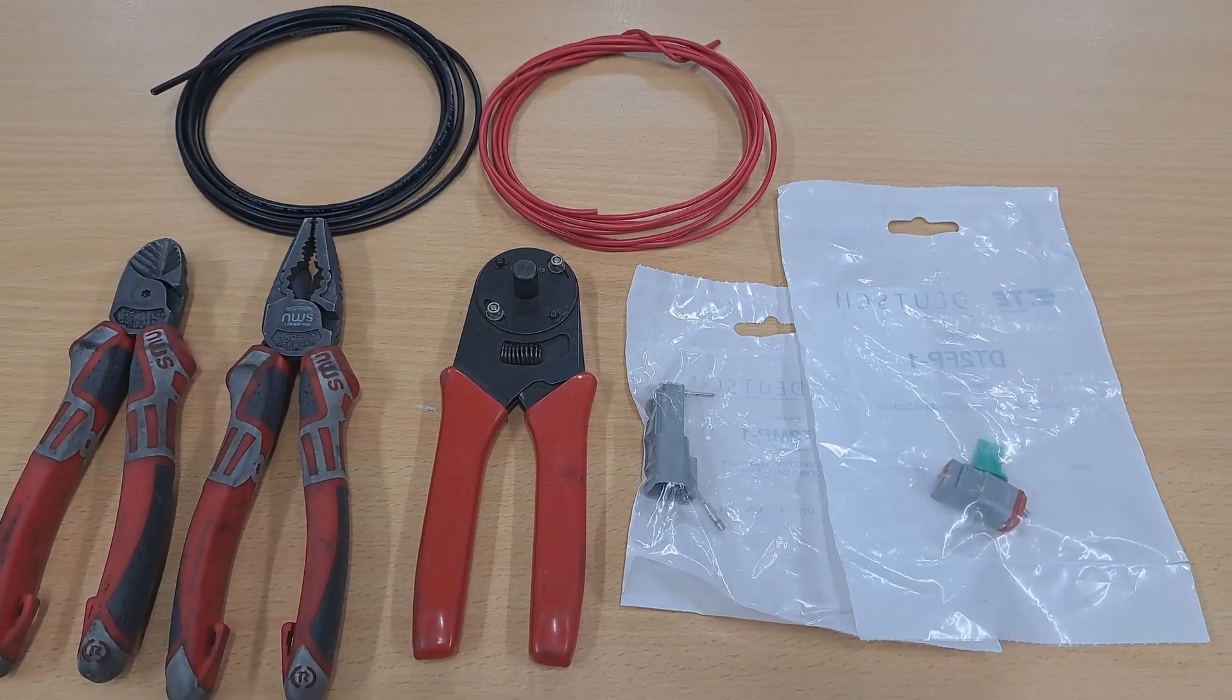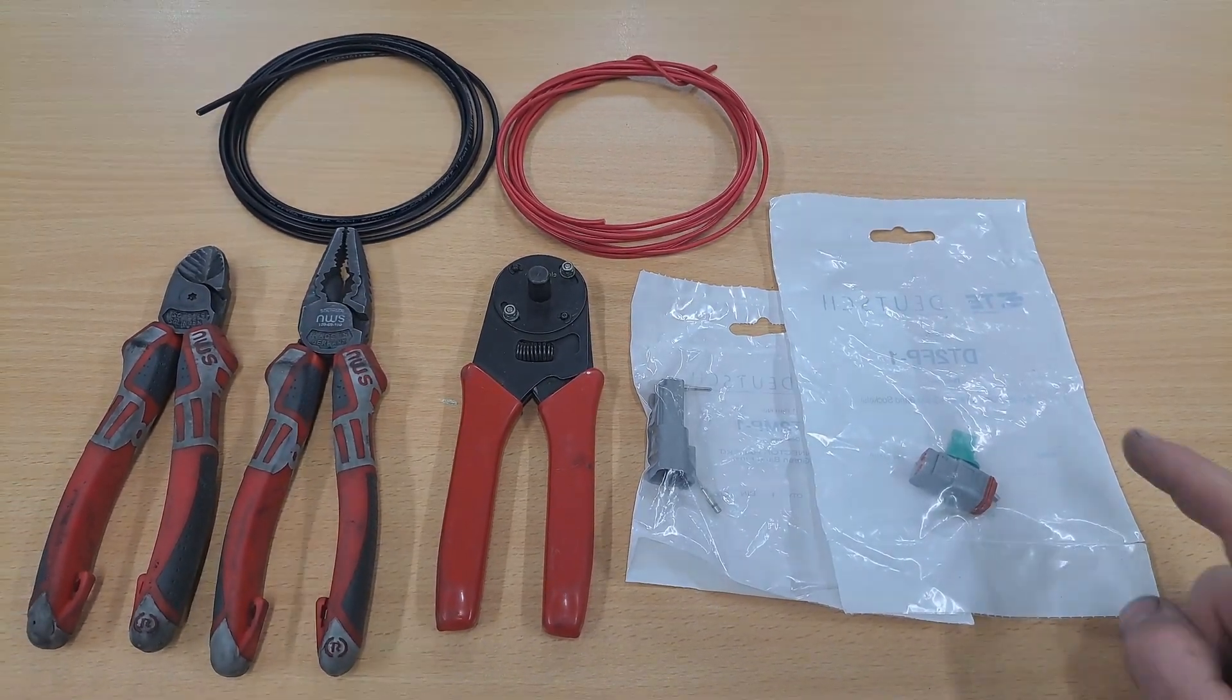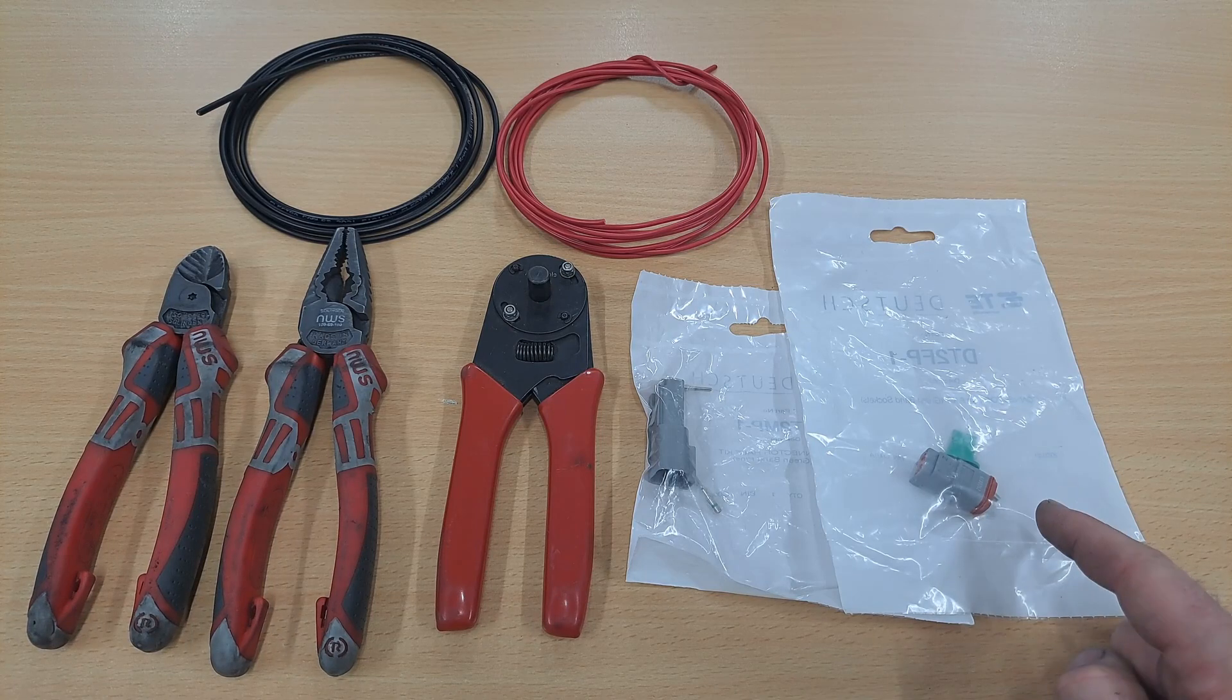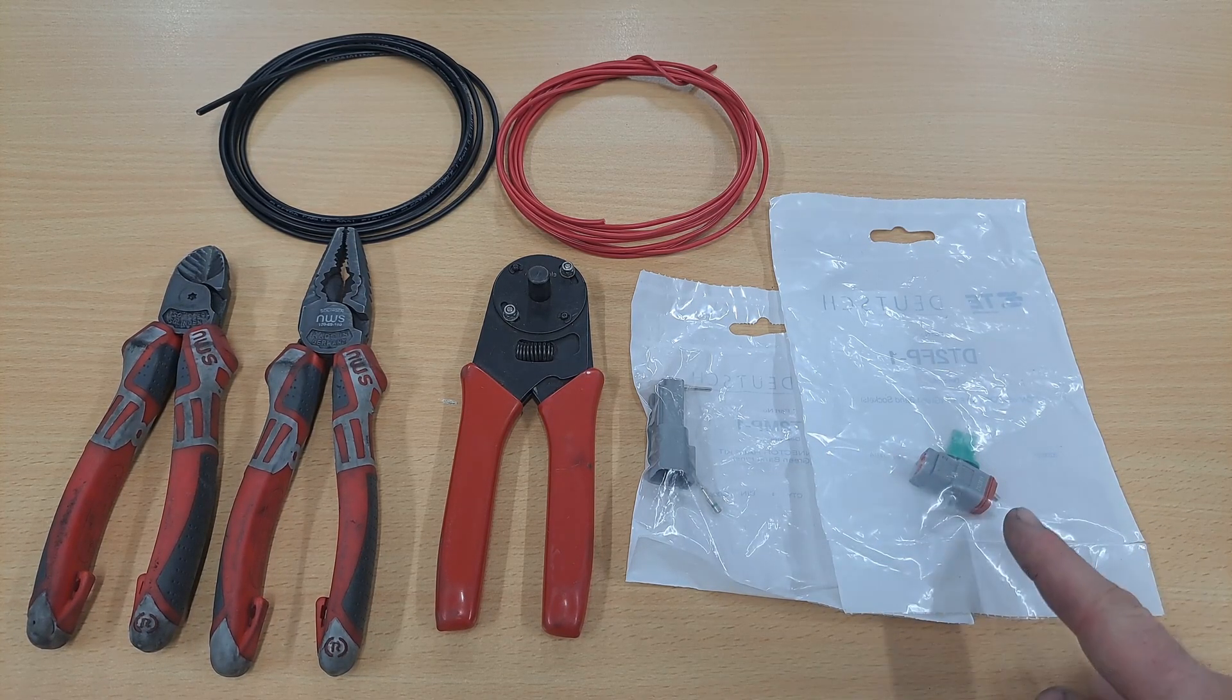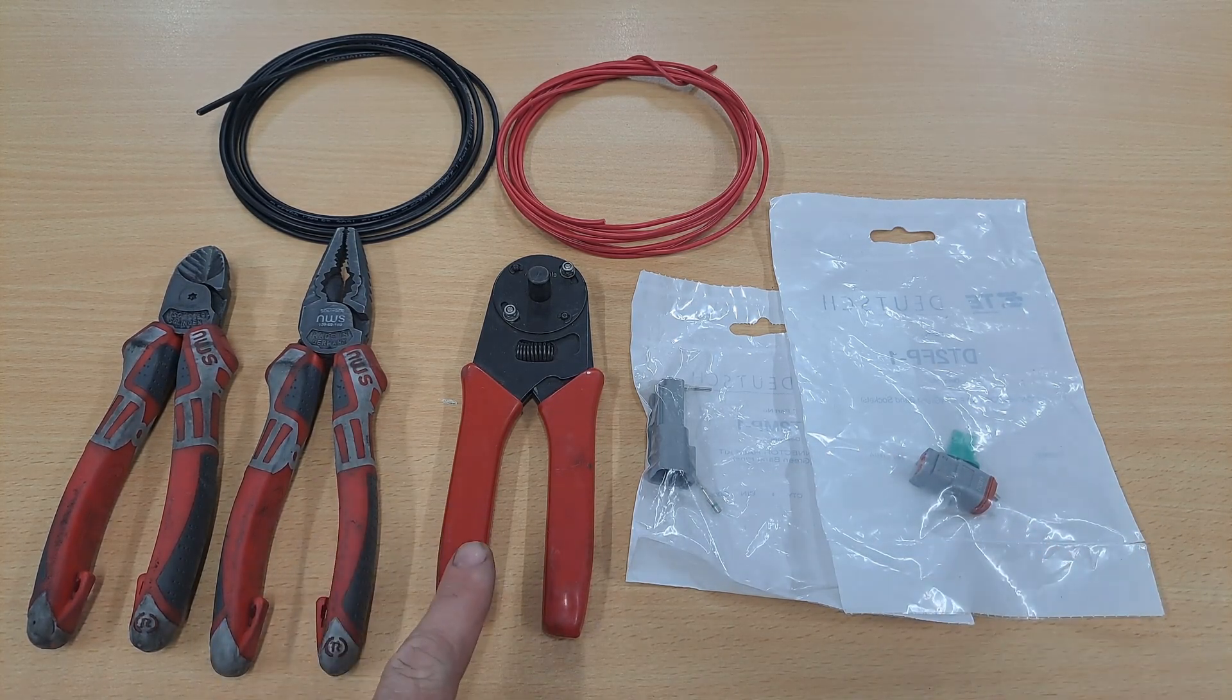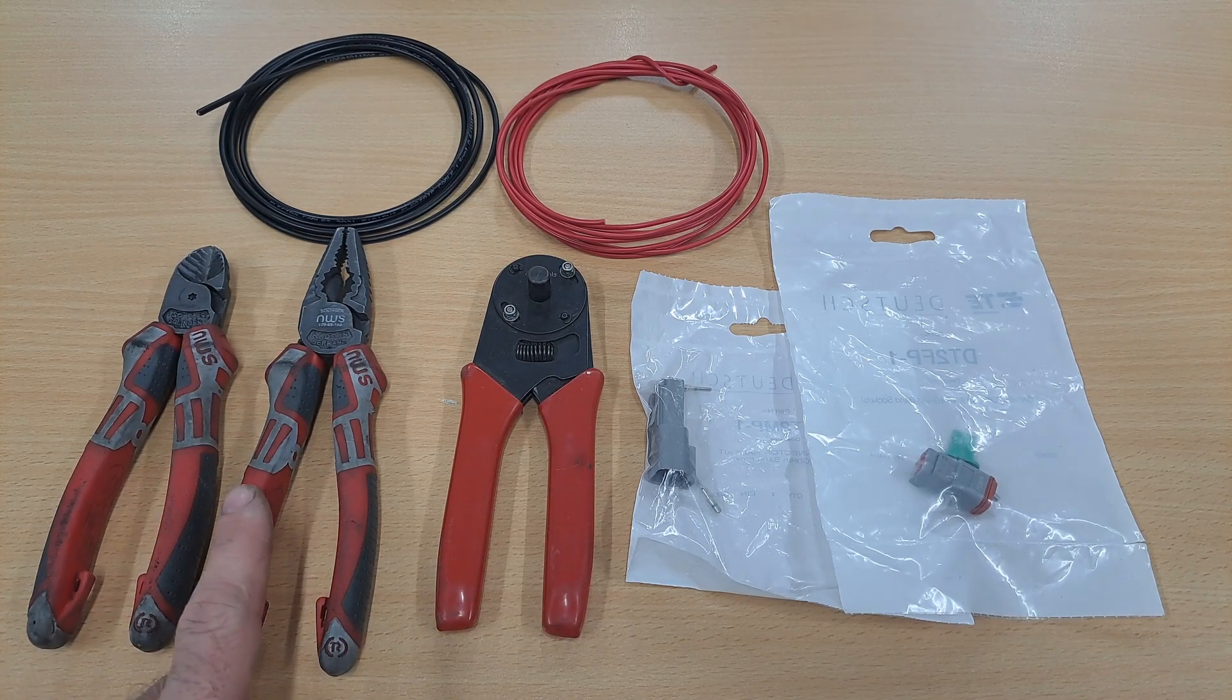Today we're going to be terminating Deutsch plugs and these are the parts you're going to need. A set of Deutsch plugs, these are half kits, we've got a male and a female, we're going to need the crimping tool for the Deutsch plug and some side cutters or pliers.